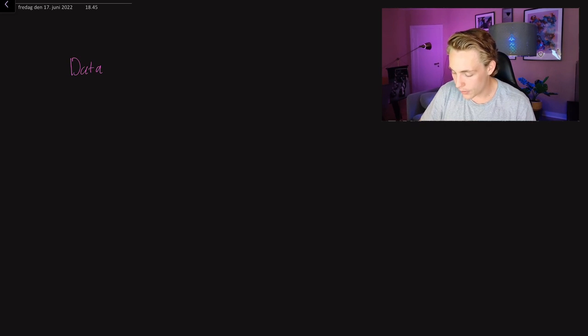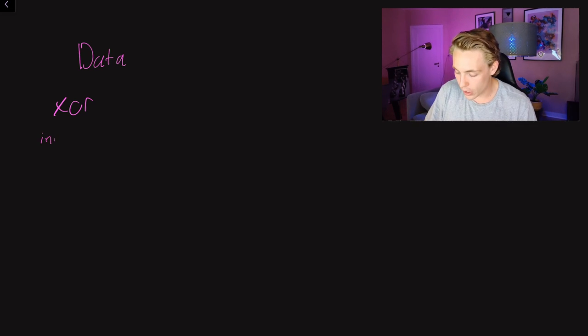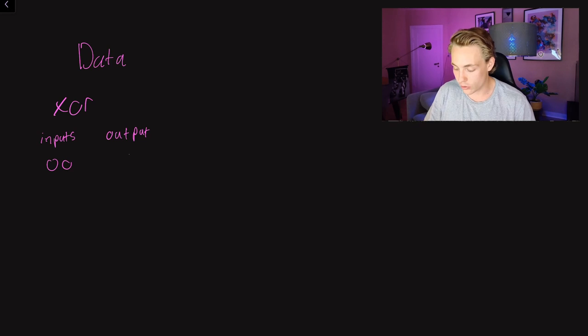First of all, I'm going to talk about the data we're going to use. We're going to train a neural network on the XOR function — we want to train a neural network that can predict the output of an XOR logical function. So we'll write up our data. If we have two zeros as input to our neural network, the XOR function will also output a zero.